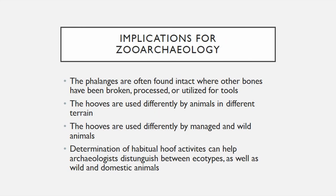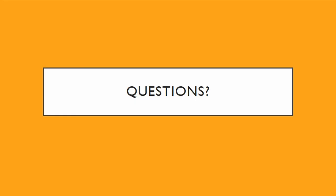So why phalanges? The phalanges are important bones in zooarchaeology of reindeer because, first, they're often recovered intact from site as they have little soft tissue to entice omnivores like humans or carnivores like dogs. Their hooves are used differently in different terrains, and hooves are used in foraging and thus used differently by foddered and unfoddered animals. Determination of habitual hoof activities can help archaeologists distinguish between ecotypes as well as wild and domestic animals. Thank you kindly for your attention.